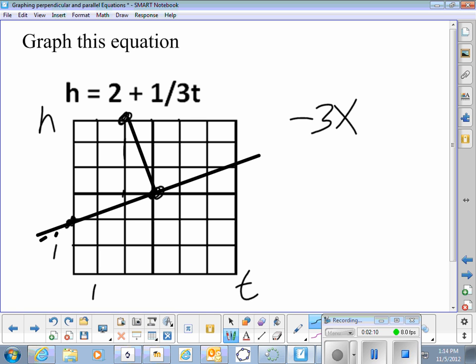So that's one thing we can know about equations that are perpendicular to each other. They have slopes that compare like these two. So a one-third slope is perpendicular to a slope of negative three.